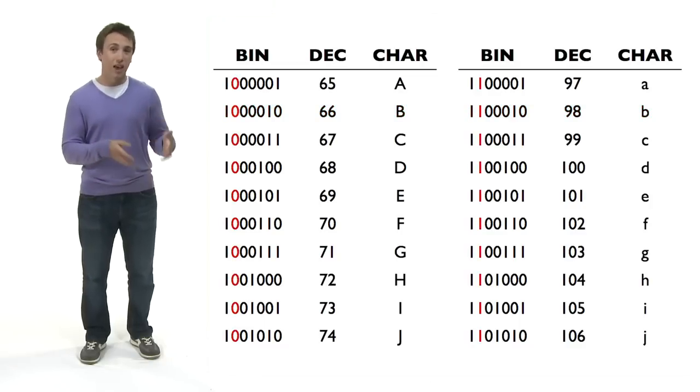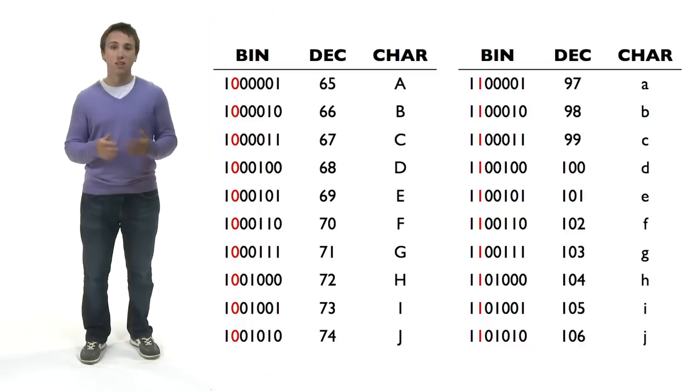The bit that's the second from the left, in the 2 to the fifths, or 32nds position, is 0 for all of the uppercase letters, and 1 for all of the lowercase letters. That means converting from uppercase to lowercase, and vice versa, is a matter of a simple bit flip.